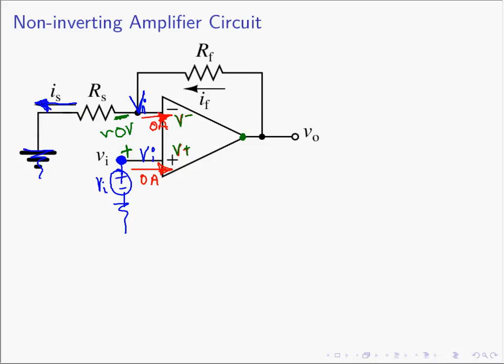Current will flow into ground because there is a voltage VI at the inverting terminal. IS is going to be the VN voltage across the RS resistor, and that gives rise to the current flowing into ground — Ohm's law on the passive sign convention. Where did that current come from? We know it didn't come from the op-amp's inverting terminal; there's no current flowing there. So this IS current must have come from the feedback path. The current here is IF, and we know IF must equal IS — that's KCL at the inverting terminal.